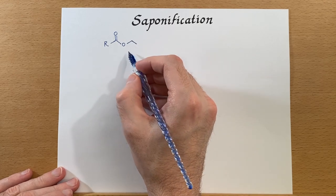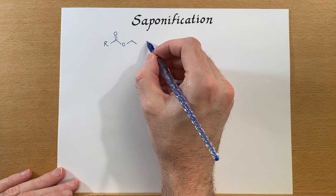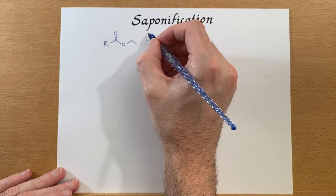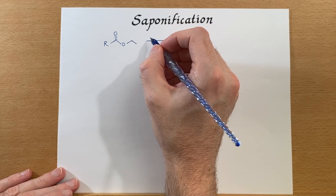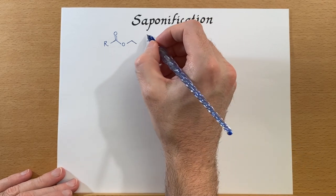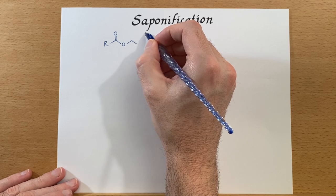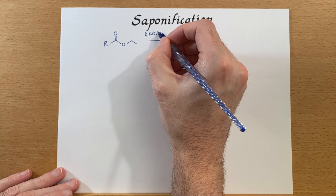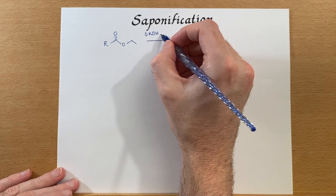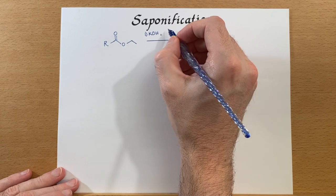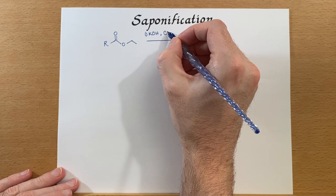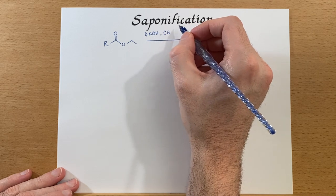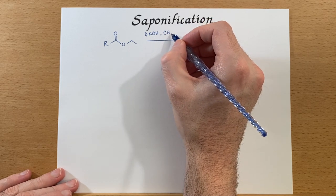We have an ester, and then we need to add some base. This could be either sodium hydroxide or potassium hydroxide — either will work. Historically, they would have used ashes from a wood fire, because that contains quite a bit of either potassium or sodium hydroxide.